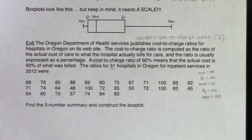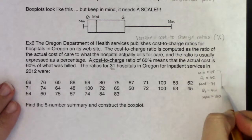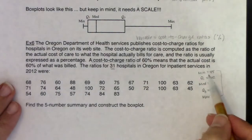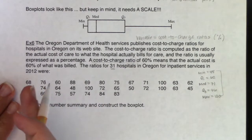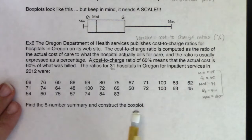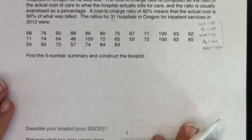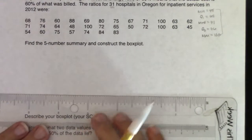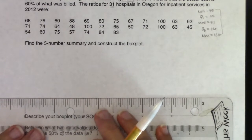Once you have those five numbers, you have everything you need to make your box plot. You have to decide how to scale your x-axis. My data goes from 45 to 100, a range of about 55%, so I'll go by fives on the x-axis: 45, 50, 55, 60, 65, 70, and so on. If you prefer going by tens — 40, 50, 60, 70, 80, 90, 100 — that's also fine. So I'll make my x-axis first.